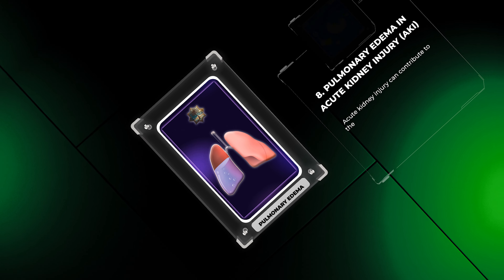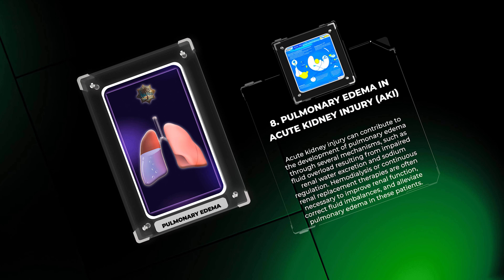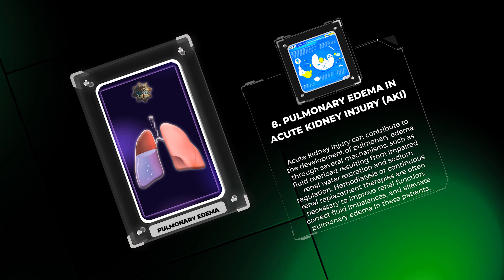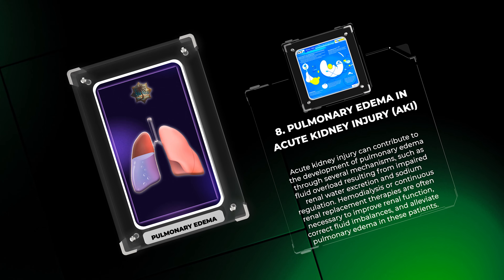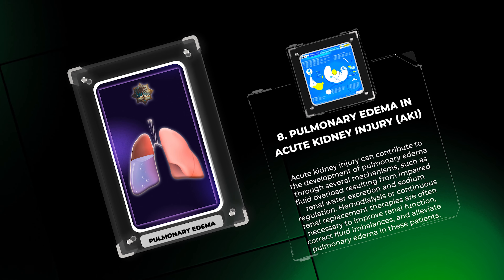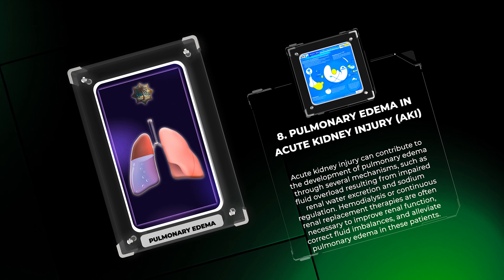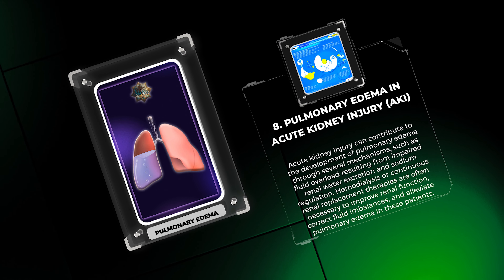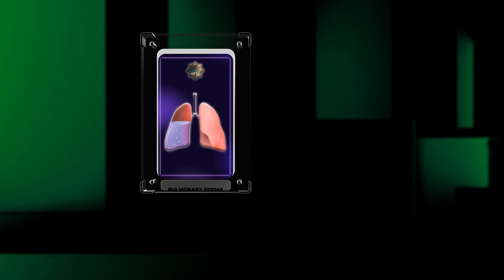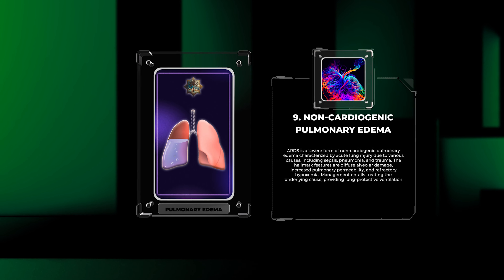Acute kidney injury can contribute to pulmonary edema through mechanisms such as fluid overload resulting from impaired renal water excretion and sodium regulation. Hemodialysis or continuous renal replacement therapies are often necessary to improve renal function, correct fluid imbalances, and alleviate pulmonary edema in these patients.